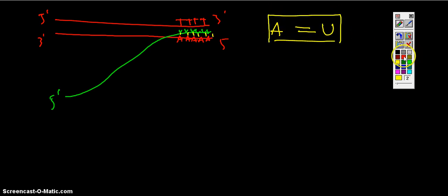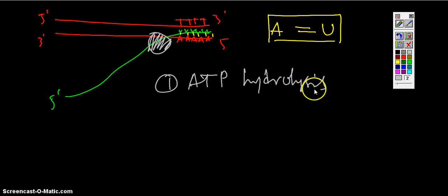And now what happens, there is a protein called rho and this rho protein binds somewhere upstream in the mRNA which is not at the end, and this rho has got two functions: one is ATP hydrolysis and another one is helicase activity.